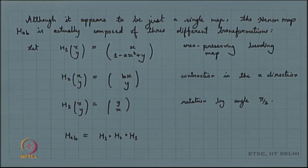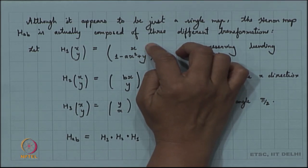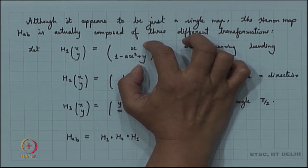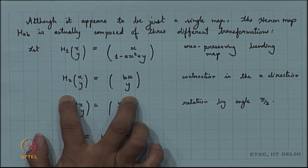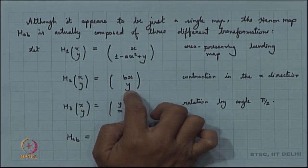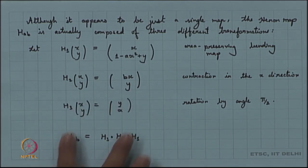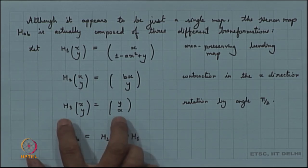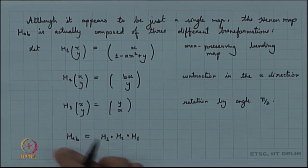To see why the Hennon map is invertible, look into the Jacobians of h₁, h₂, h₃. For h₁, which has coordinate functions x and 1 - a·x² + y, the determinant of its Jacobian turns out to be 1, so h₁ is invertible. For h₂ with coordinate functions b·x and y, the Jacobian determinant also equals 1, so h₂ is invertible. For h₃, the determinant is -1, but the modulus is 1, so it is also invertible.